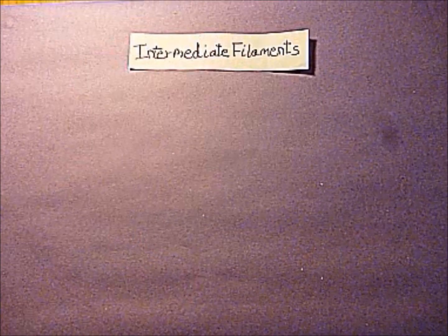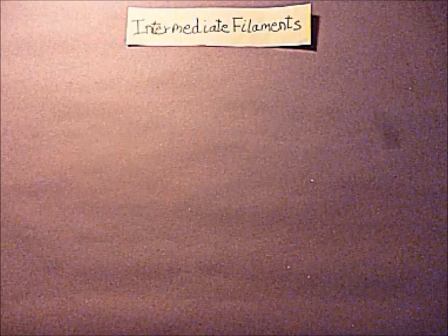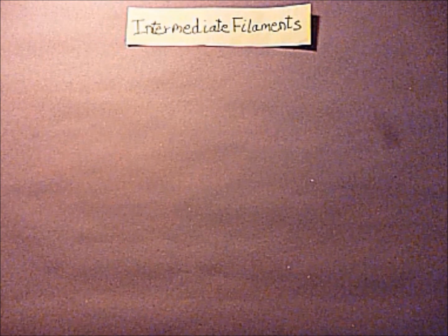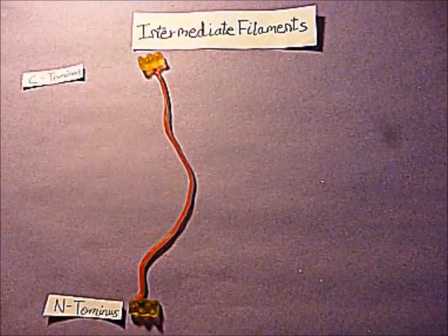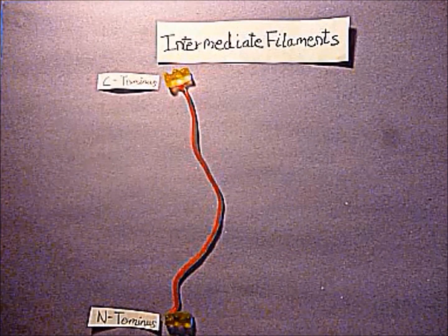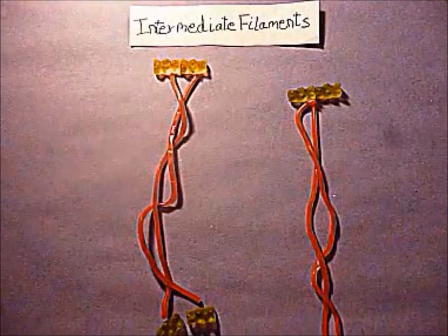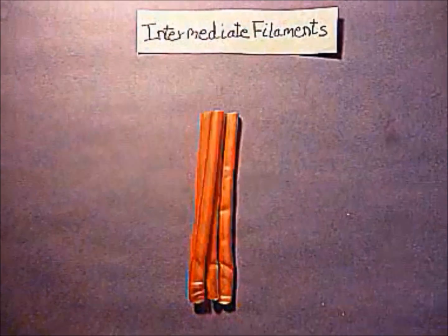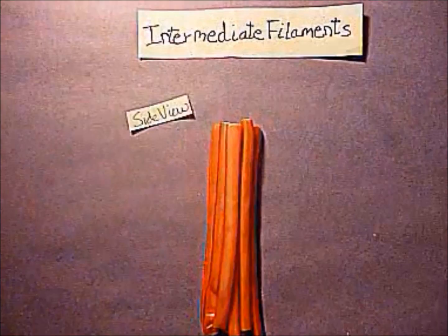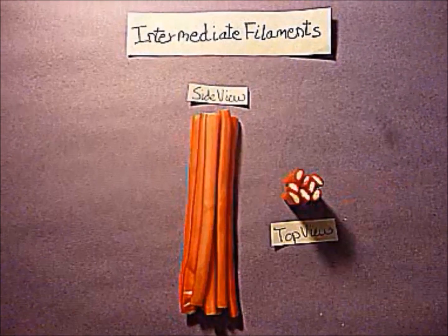Intermediate filaments are heterogeneous. There are seventy genes coding for different intermediate filament monomers in the human genome. Two monomers wrap around each other to form a rope-like dimer. Two dimers associate in an anti-parallel staggered arrangement to form a tetramer. Intermediate filaments are not polarized because of this.